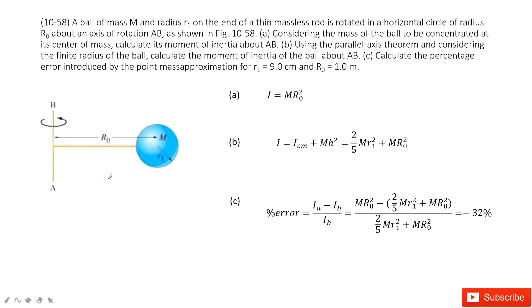In this chapter, we talk about rotational motion. You can see in this system we have a ball of mass M and radius R1. It rotates along the AB axis with distance R0.